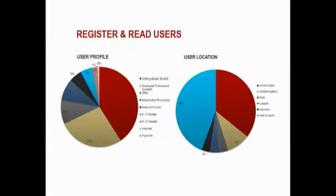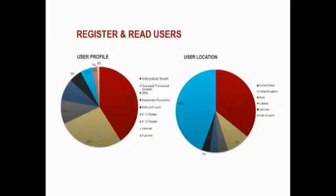Who are these users? The chart on the left breaks out users by self-reported classification. For some, Register and Read is their only access option; for others, it supplements the partial access provided by their institutions. The largest components are undergraduate and graduate students — not our target audience, which is independent researchers and unaffiliated scholars, though we have thousands of those too. Looking at the chart on the right — top countries — the U.S. is by far the largest, followed by UK, India, Canada, and Germany. But the 'everywhere else' wedge is huge. Many of these users are in regions with no institutional access to JSTOR.